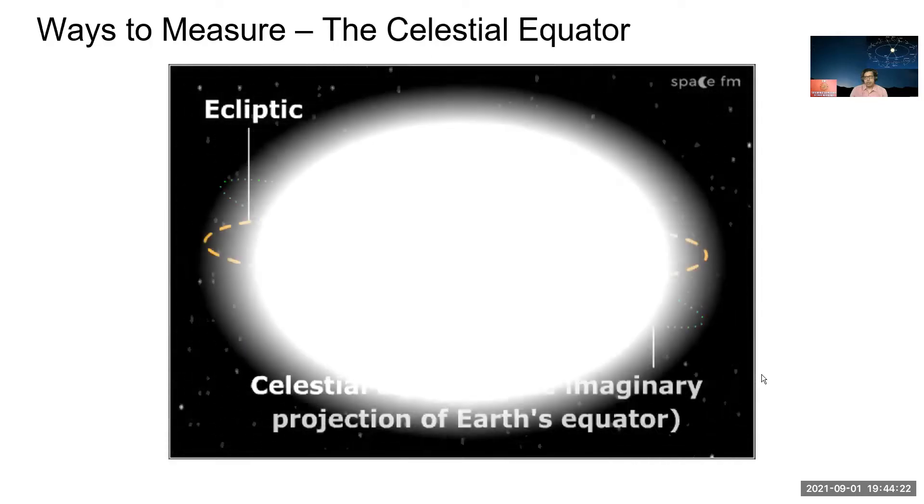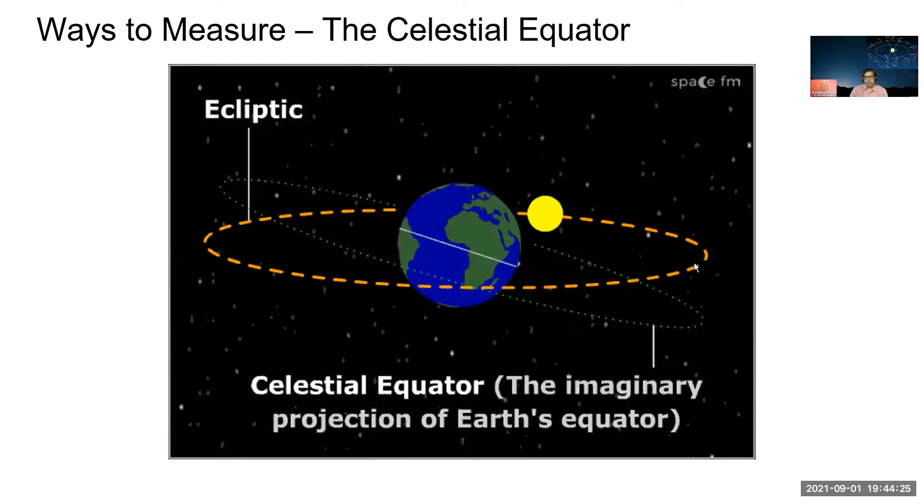Let me move to the next. The next concept is celestial equator. Now that you know about the ecliptic, which is like the ecliptic is on the same plane as the sun, planet, Earth, everything is on the same plane. But within that, it is tilted at an axis. So the Earth's equator is actually at an angle. And that is what is given by this green dotted line. So if we extend that, similar to the ecliptic, you extend that it's called a celestial equator. Again, these are imaginary ones.